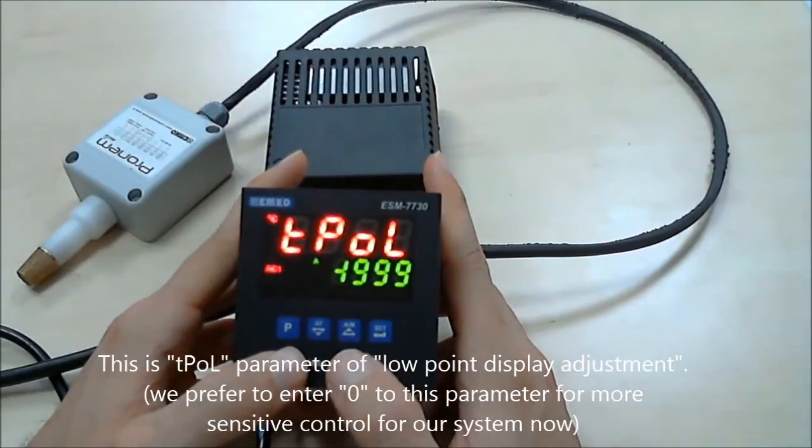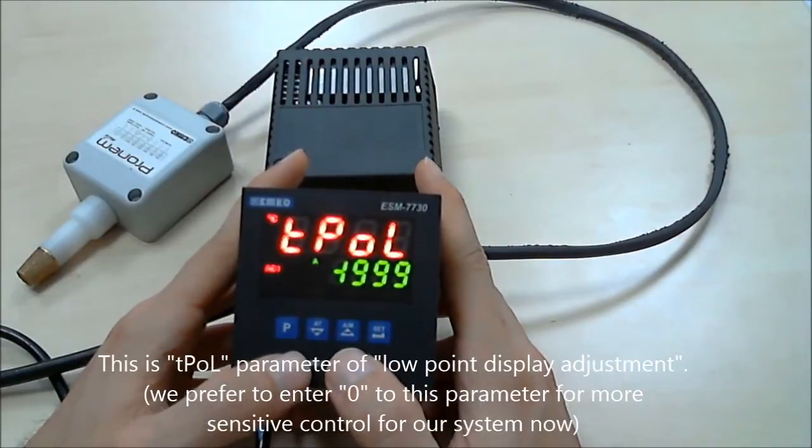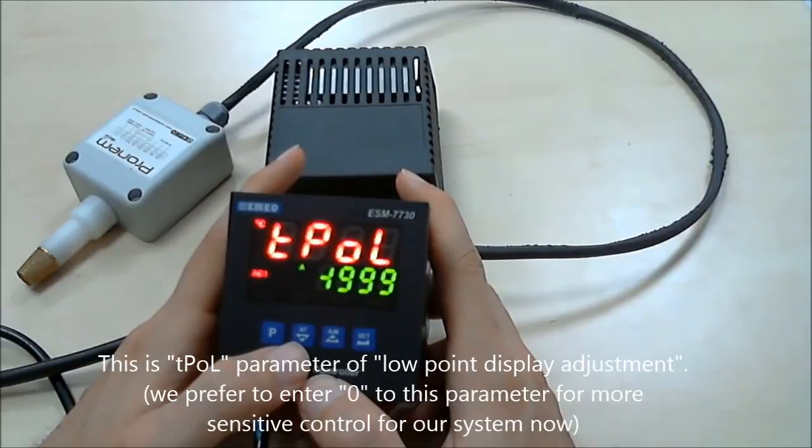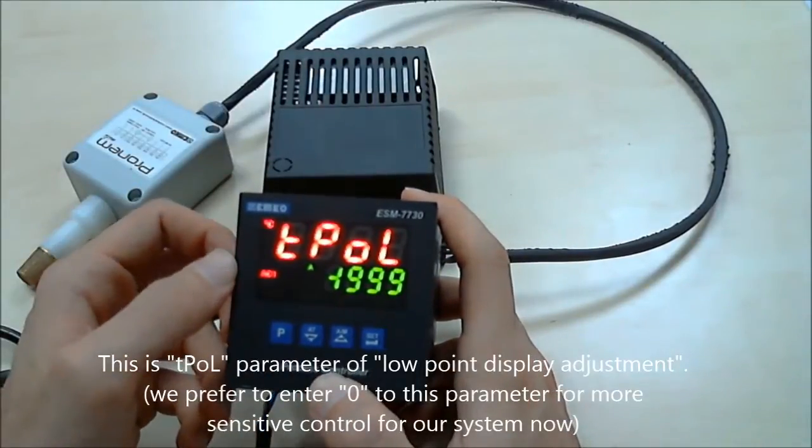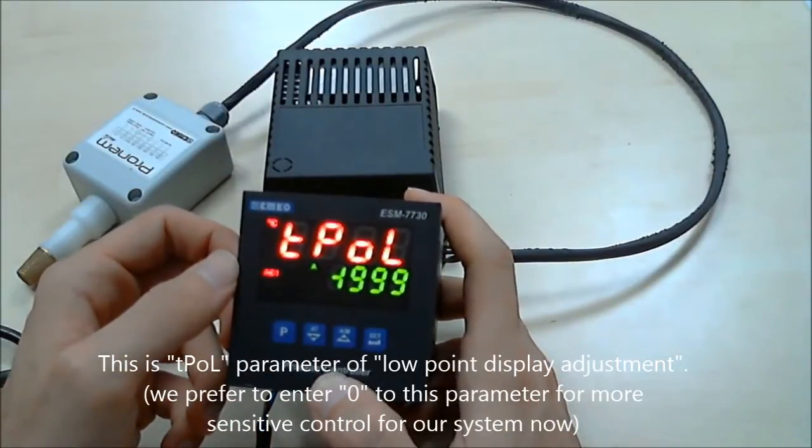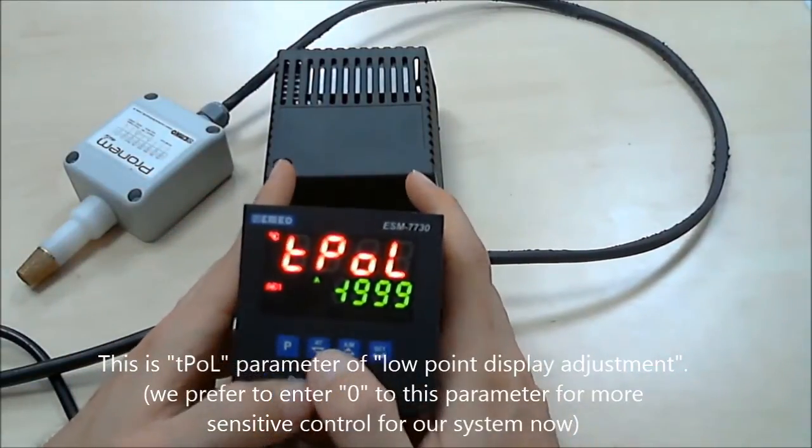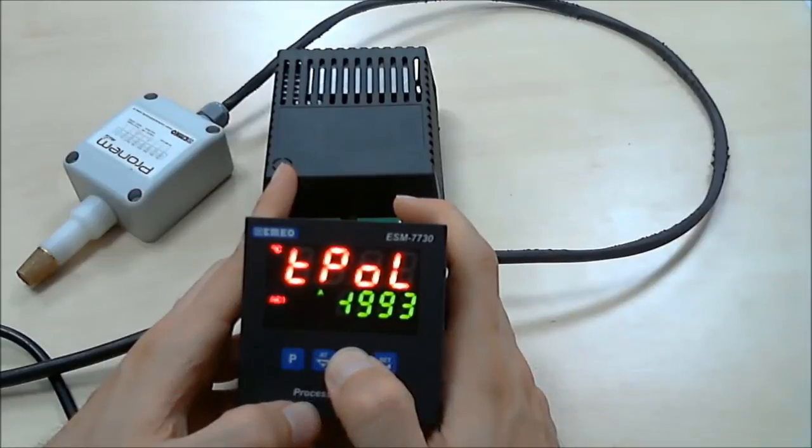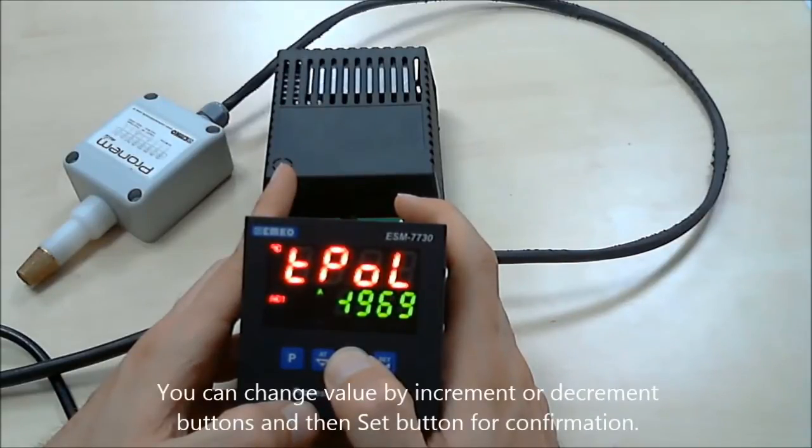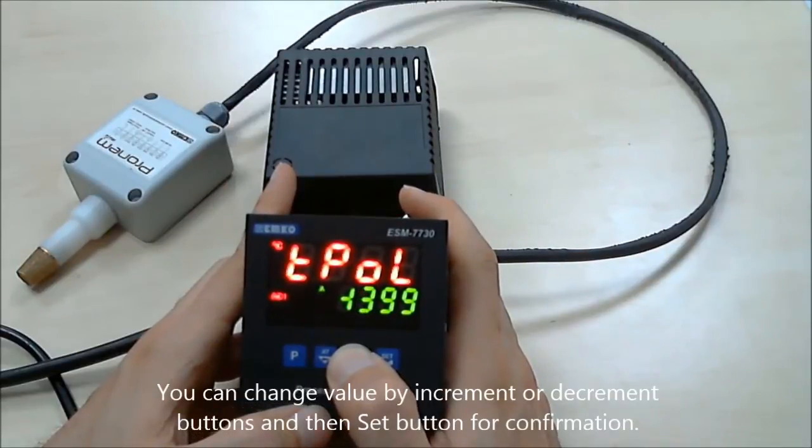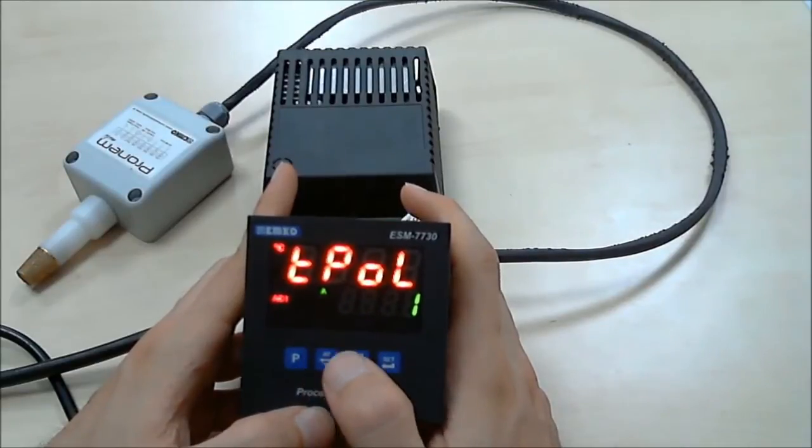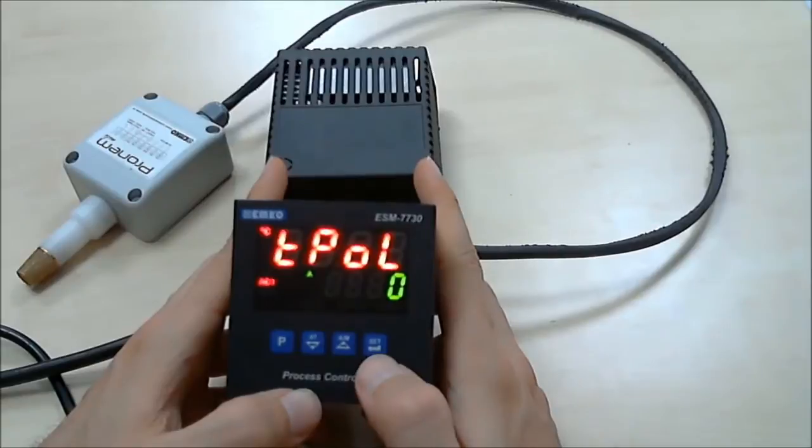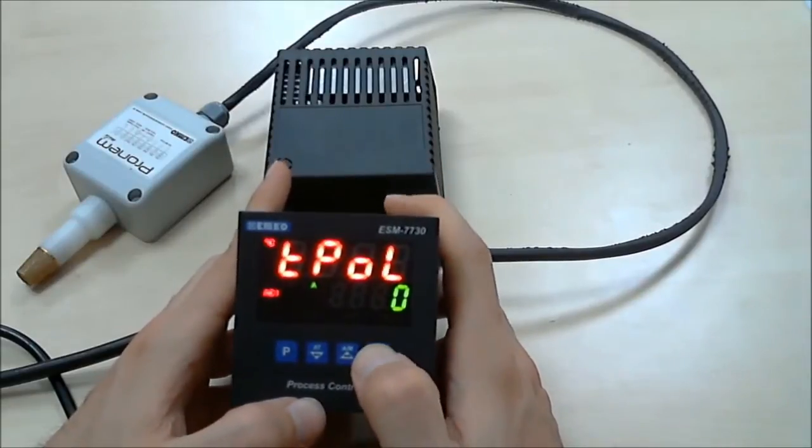This parameter is for low point display adjustment. We would like to work between 0 and 100 scale. Using increment or decrement buttons, we change it. We will select number 0, scroll, and press set button for confirmation.